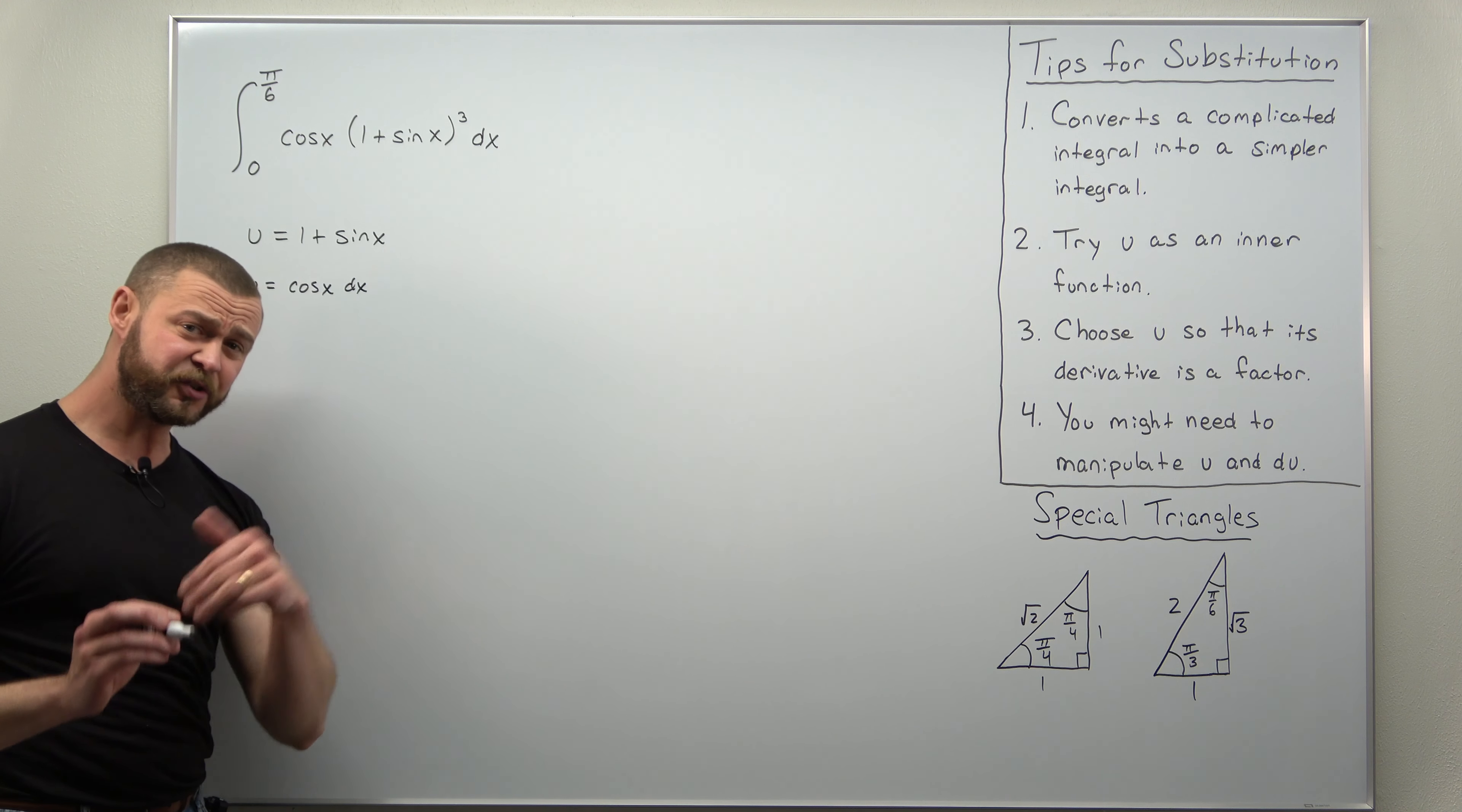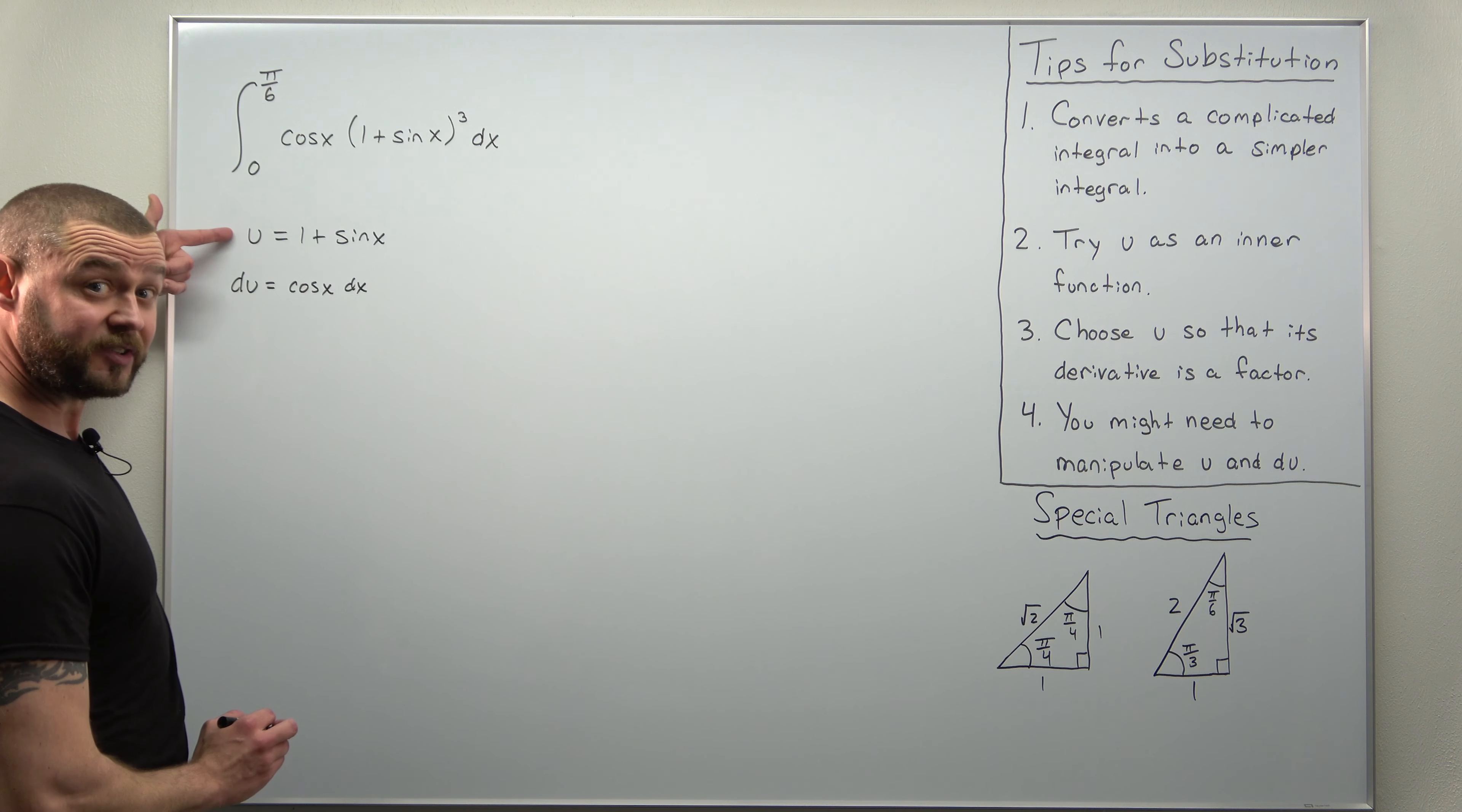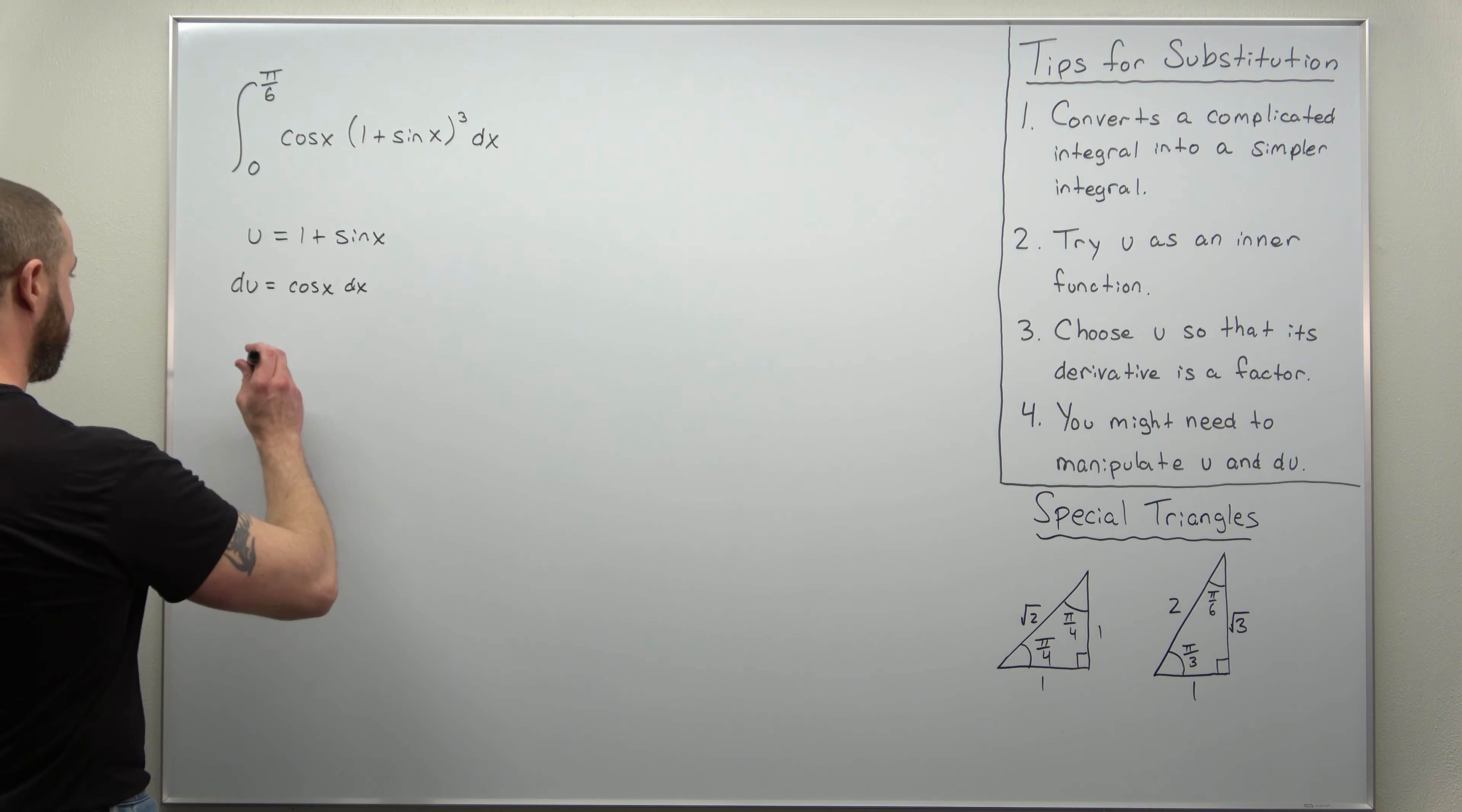The only other thing we're going to do, which makes this a little tricky but it really shouldn't be, is we're going to convert our limits from x limits 0 to π over 6 to new u limits, and we're going to do that with our usual conversion chart.